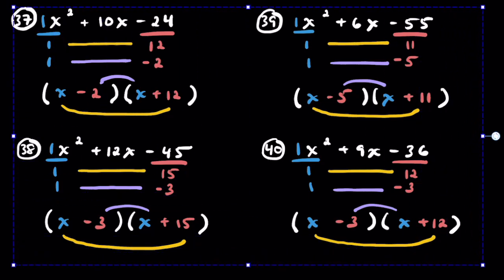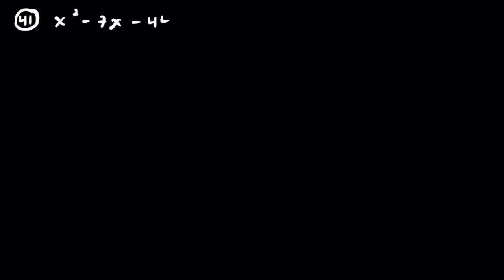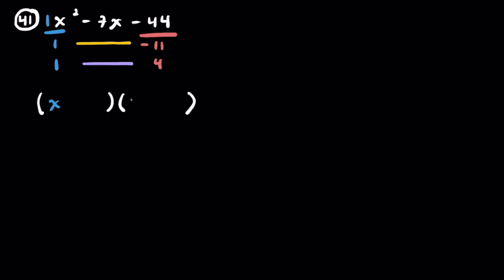Let's do 10 more where I'll mix it up. The first 40 were in a specific pattern of 10 of each type. For the last 10 of this first group, I'm going to mix all the signs. Problem 41: x squared minus 7x minus 44. One and 1. For negative 44, let's use 11 and 4 — negative 11 to get negative 7x. Negative 11x plus 4x gives negative 7x. Answer: (x − 11)(x + 4).